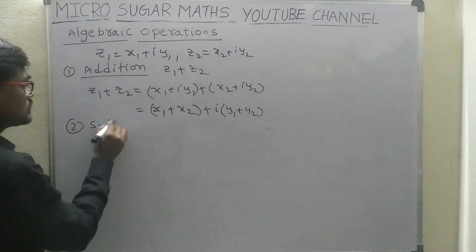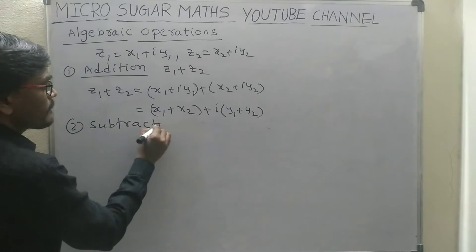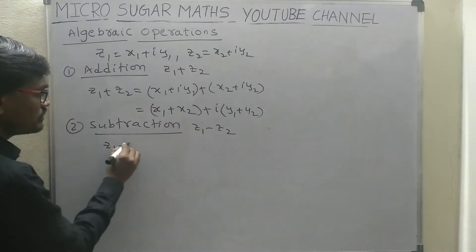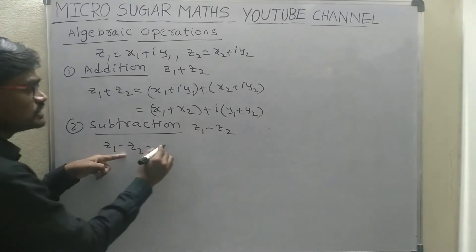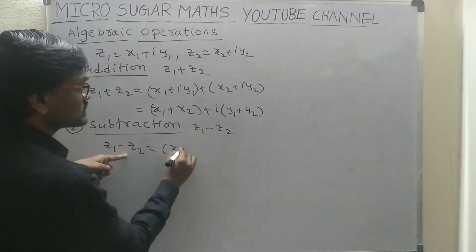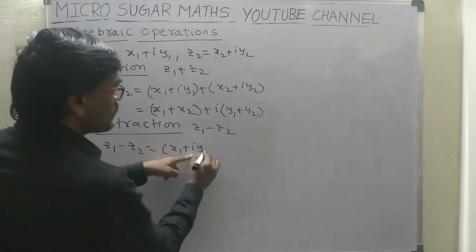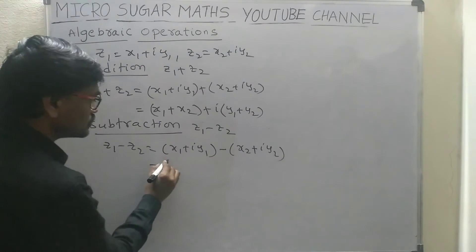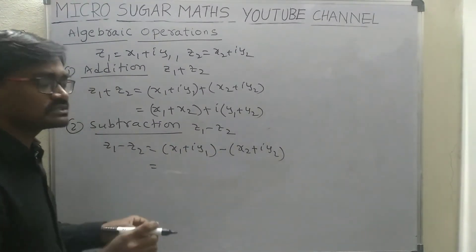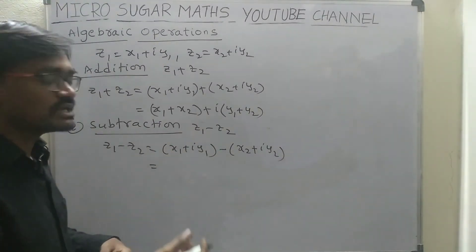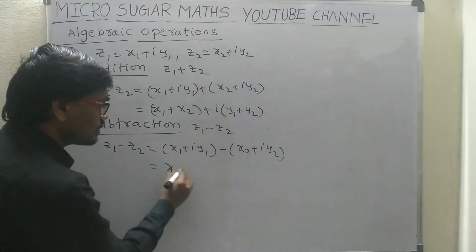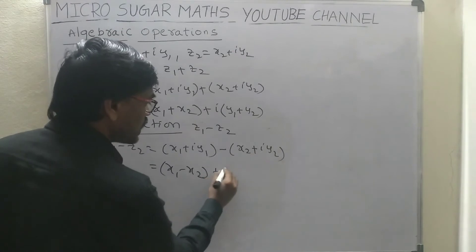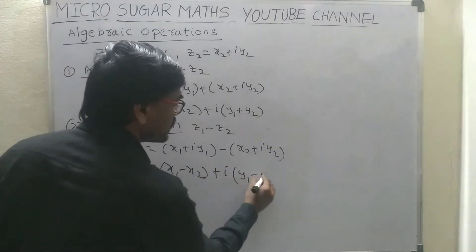Next, subtraction. Subtraction of two complex numbers is denoted by Z1 minus Z2. Its value is Z1 minus Z2 is equal to: what is Z1 value — X1 plus iY1 — minus X2 plus iY2. Here also we should subtract real parts and imaginary parts respectively. That is equal to (X1 minus X2) plus i(Y1 minus Y2).